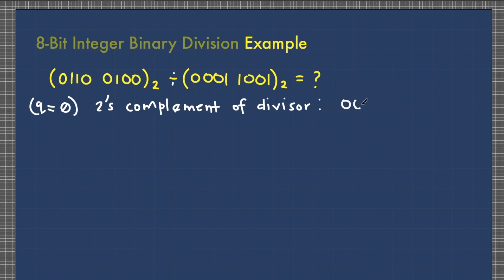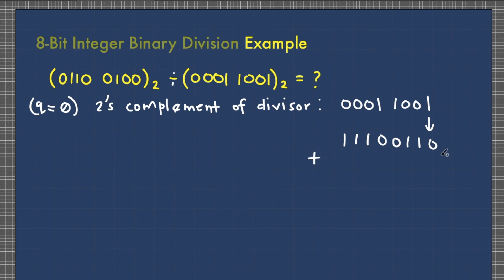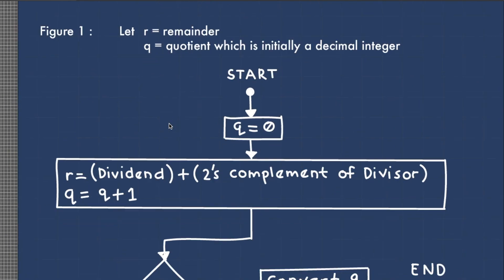We have the divisor 00011001. To get its two's complement, we first find its one's complement: 11100110. Then add 1 to the least significant bit: 0 plus 1 is 1, then copy the remaining bits. Now we can repeatedly use this two's complement in our algorithm.